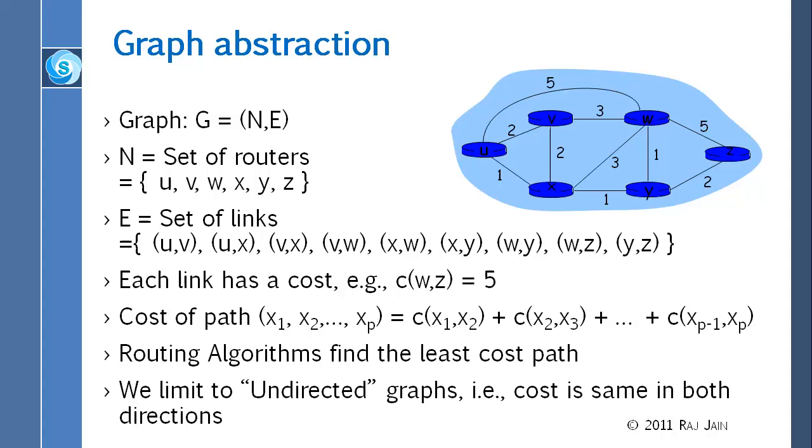Now, the costs do not have to be symmetrical. For example, the cost from going V to X could be different than going from X to V. In general, they are. For example, when you get a DSL connection, the uplink and the downlinks are always different speeds by design. So, the costs are not the same for uplink and downlink.